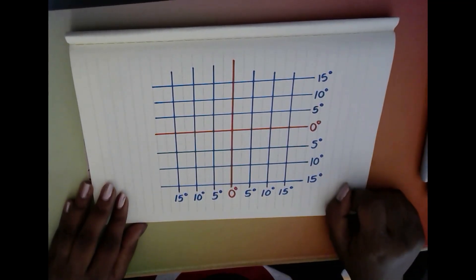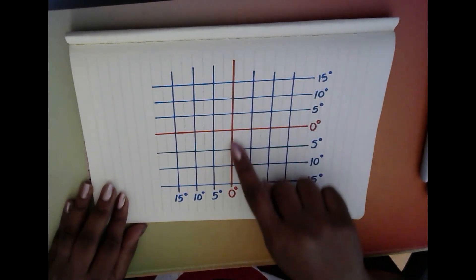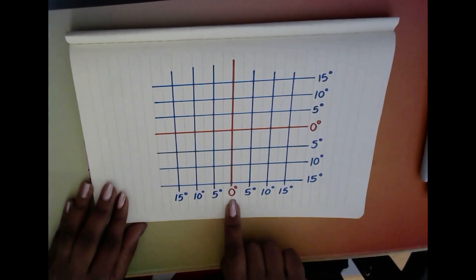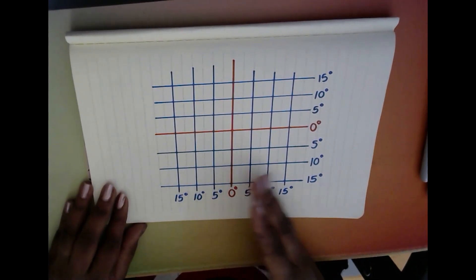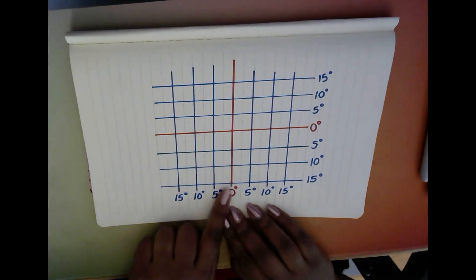Then we look for our Greenwich meridian, which is also a zero degree line but of longitude. Everything on the right-hand side of the Greenwich meridian will be east, and everything on the left-hand side will be west.